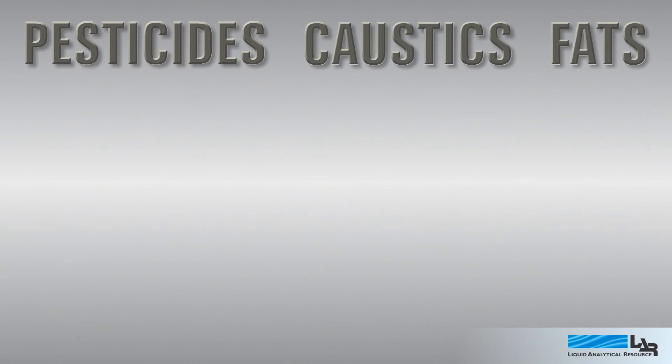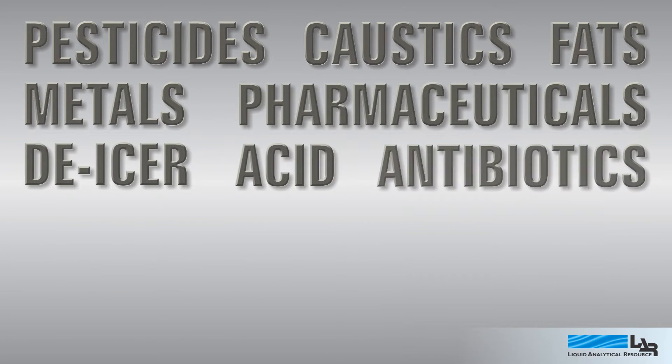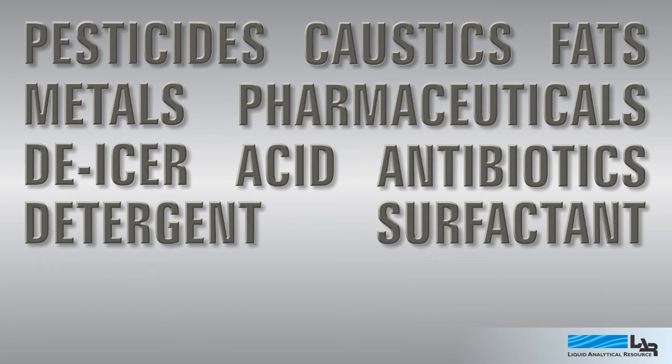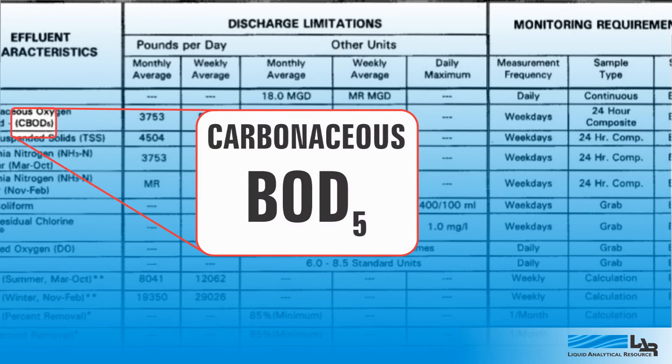BOD is also important to industry. Compared to the predictable carbon compounds of residential sewage, industrial waste is a wild card, so regulators issue permits that define discharge limits, and one of these limits is BOD. So how can a permit holder monitor for compliance when a BOD-5 test requires five days to complete?